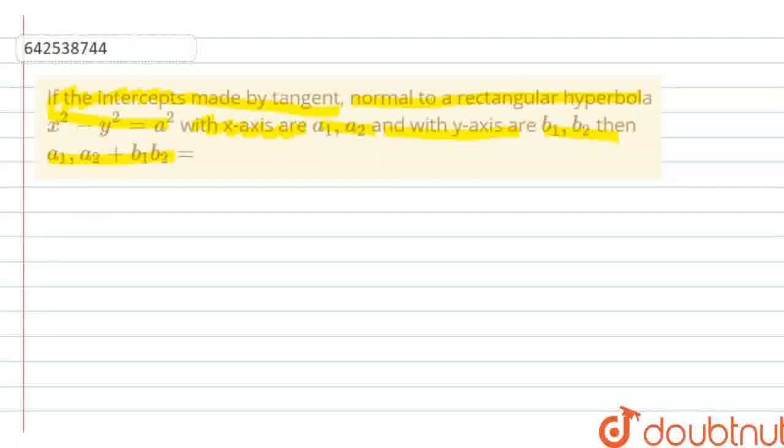Now, assuming the rectangular hyperbola, the equation would be xy is equal to c square. So, this is what we have assumed.